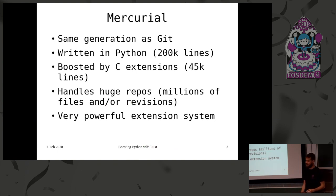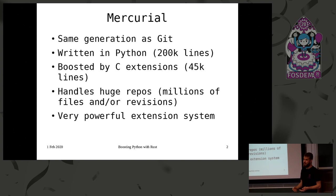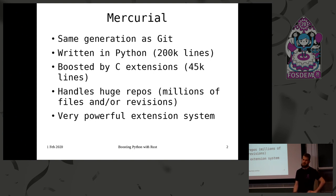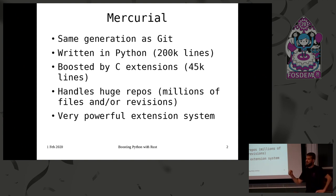As a recap for people who don't know what Mercurial is: it's a version control system, same generation as Git. It was actually made in the same month of April 2005 by a kernel developer. It's written mostly in Python with a decent chunk of C extensions, mainly for speed. It handles huge repositories for companies like Facebook and Mozilla, with millions of files and revisions. It also has a very interesting and powerful extension system — check it out on your own.